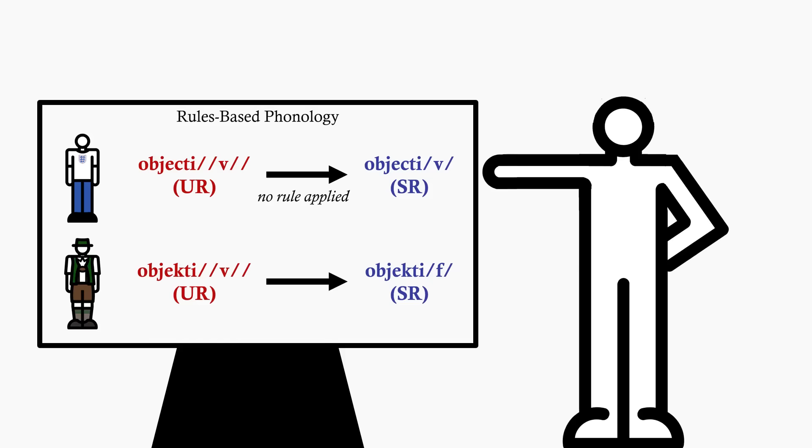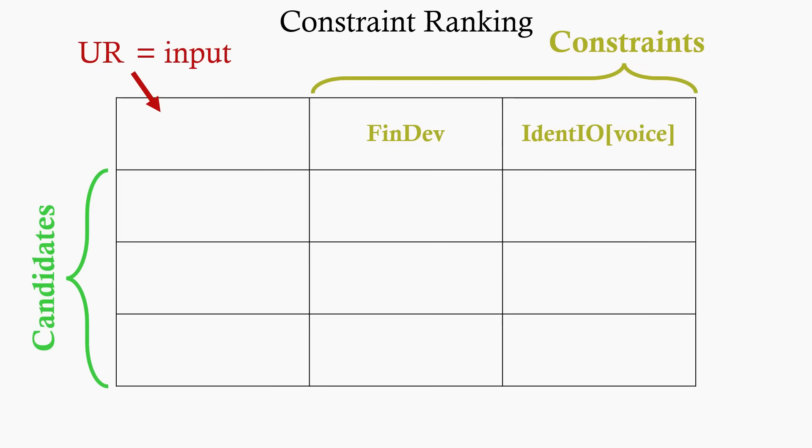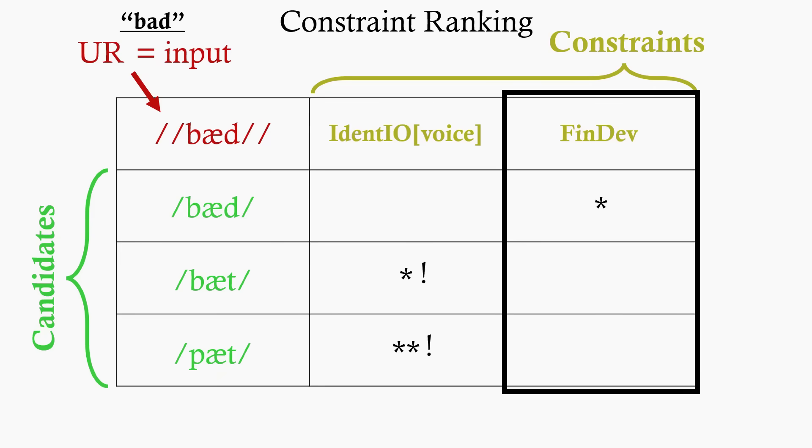Here, instead of rules being language-specific, all constraints are present in all languages, but the ranking of them has changed. If we do the same exercise in English for the English word BAD, we can just switch identiovoice and findev around to get the correct results. Because identity is more important than findev in English, BAT and PAT get eliminated first, and BAD remains the least bad candidate, becoming the output.